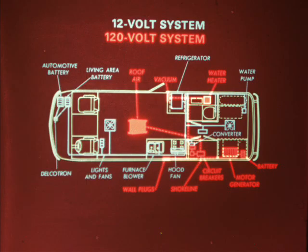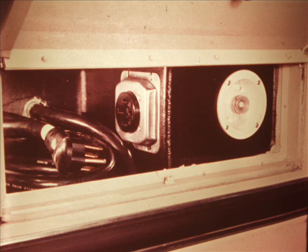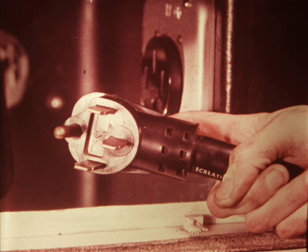In order to understand the motor home's living area electrical system, you should know the path electricity travels from its source. Let's start at the external power connection. The motor home's power cord has a four terminal plug — it is actually a split service cord since it contains two 120 volt circuits, each rated to carry 20 amps.